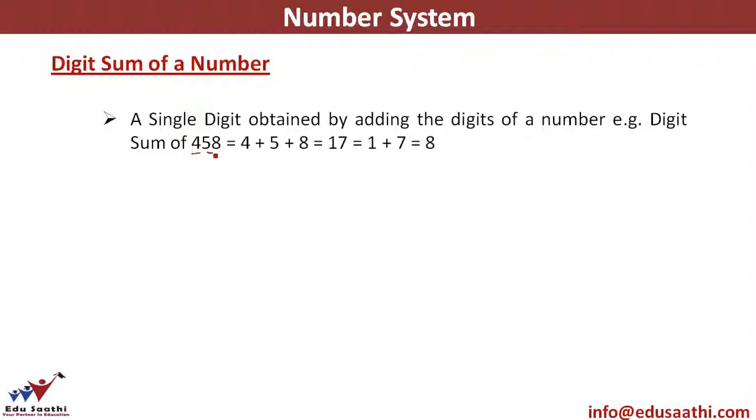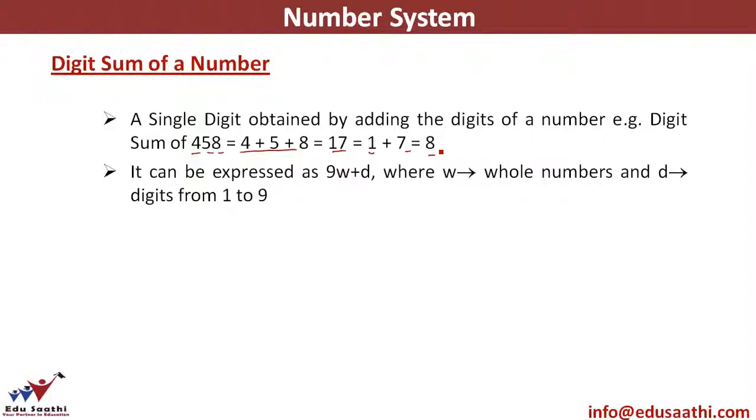So 4 plus 5 plus 8, I get 17. This is not a single digit number, this is still a two-digit number. So I'll keep on adding the digits of the number till the time I get a single digit. The single digit that has been obtained in this case comes out to be 8.